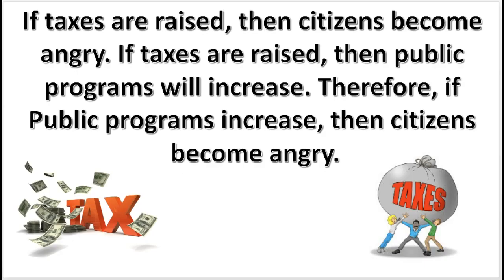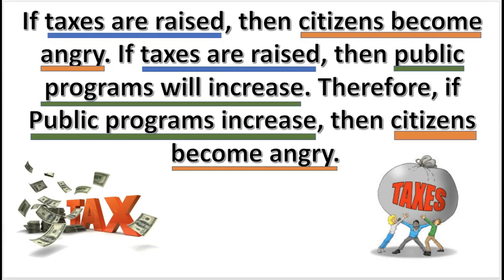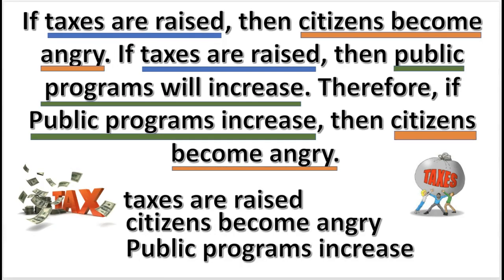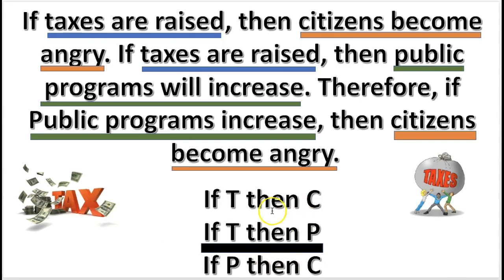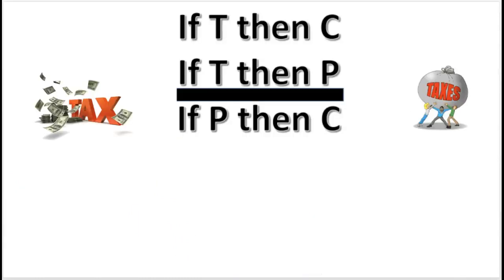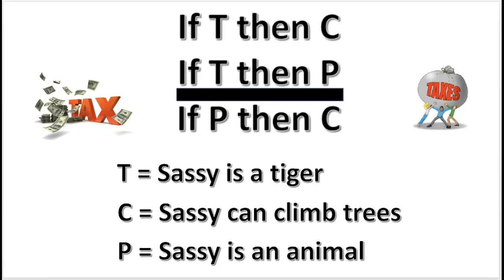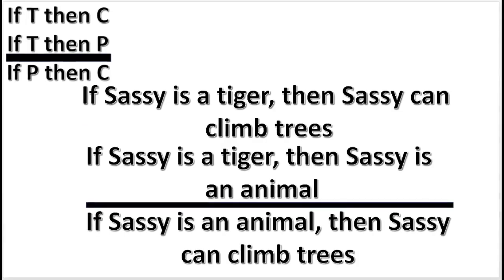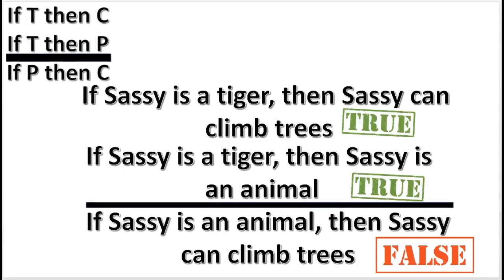Here is another example. When we compare the statements, we see that the argument is composed of three simple statements. Each of the statements appears twice, and we get this form of the argument. Now inventing three new statements to replace T, C, and P can be difficult, but here are three that will work. When these statements are substituted into the argument form, the two premises are true and the conclusion is false. The easiest way of making a conditional statement false is by making the antecedent true and the consequent false.